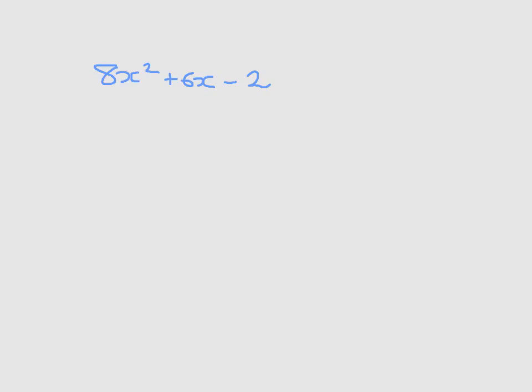We're going to factorize this quadratic by using a method known as splitting the middle term. To do that, the first thing we're going to do is multiply the number which is multiplying the x squared, which is 8 here, with the number which doesn't have an x. In this case, that's negative 2. And we do this here. That's 8 times negative 2, which of course is equal to negative 16.